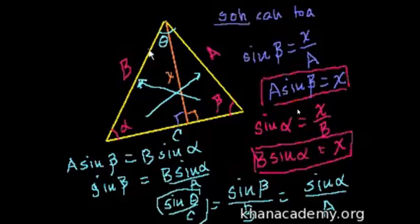I mean, we picked B arbitrarily. We could have done the exact same thing with theta and C. But instead of dropping the altitude here, we would have had to drop one of the other altitudes. And I think you could figure out that part.